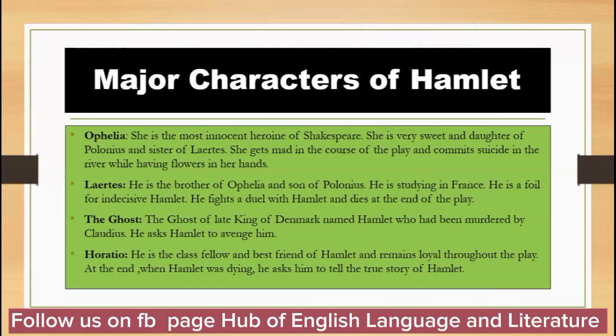Next is Laertes, son of Polonius. He is studying in France. He is a foil for the indecisive Hamlet. He fights a duel with Hamlet and dies at the end of the play.